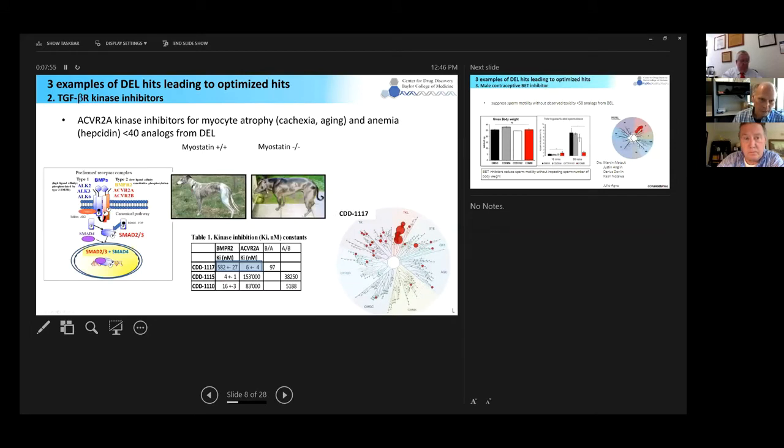I showed you the BMPR2 in the previous slide relative to the activin receptor. Now this is just the converse. We looked at activin receptors and we found a separate compound that was re-synthesized 1117. Its affinity for activin receptor type 2A is 6 nanomolar compared to BMPR2 where the affinity is around 582 nanomolar. You can see that CDD1117 shows some selectivity in the kinome scan shown on the right-hand side, but probably not as selective for its ligand. One of the things you could imagine we're doing is trying to improve the selectivity profile of those compounds.